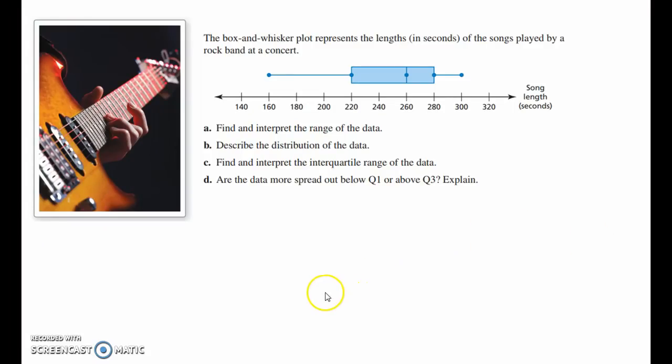We will be looking at these types of problems right here. The Box and Whisker Plot represents the lengths in seconds of the songs played by a rock band at a concert. Well, if you don't know anything about a Box and Whisker Plot, at least you could tell that the shortest song length is 160 seconds, the longest is 300. Now we're going to learn how to read the rest of this and interpret it.